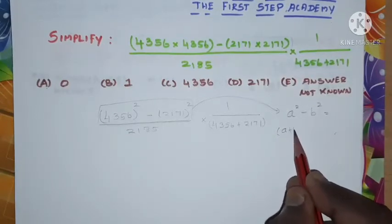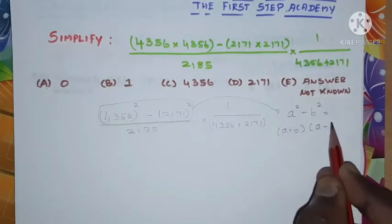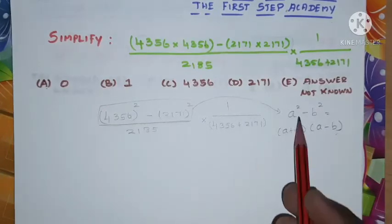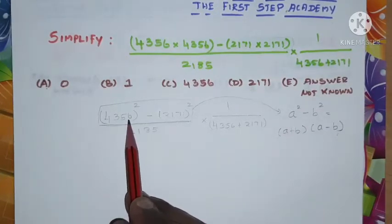So here a is 4356 and b is 2171. I'm going to apply this formula over there.